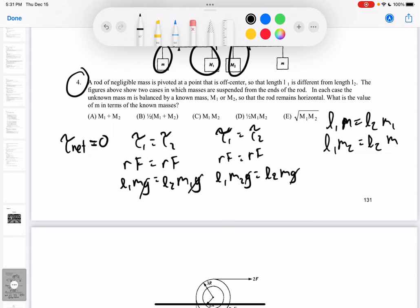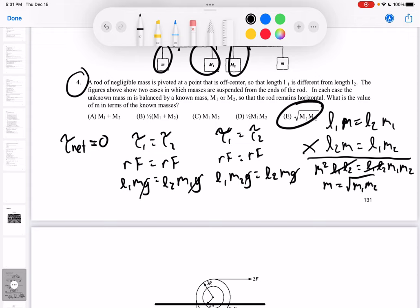And what I'm actually going to do is I'm going to rewrite this second equation and put my m, my just unknown mass, on the left side. So I have L2 m equals L1 m2. And then what I'm going to do is I'm going to multiply these two equations, and so I'll have m squared, L2 times L1 equals L1 L2 m1 m2. You notice the L1 L2's cancel, so I'm left with m equals root m1 m2, and so that would just be E.